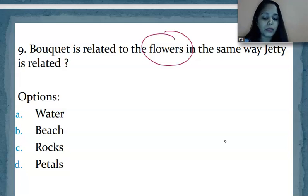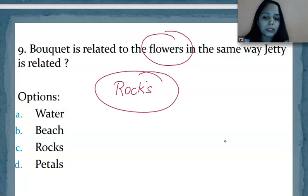In the same way, it's asking on the basis of similarities, you have to find out which word jetty is related to. See, when rocks are kept together in one place, when you keep rocks together, stones together, that is called a jetty. So the answer here will be option C which is rocks. I hope this is clear.